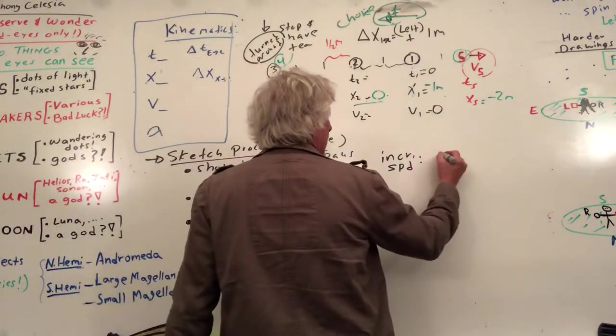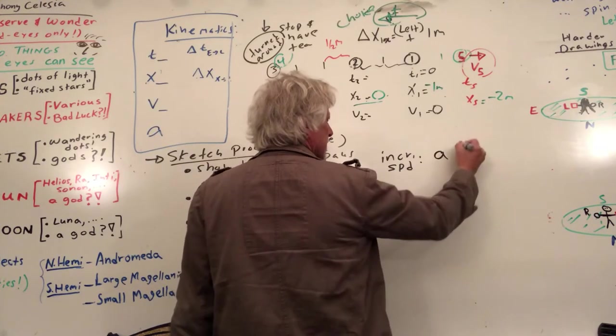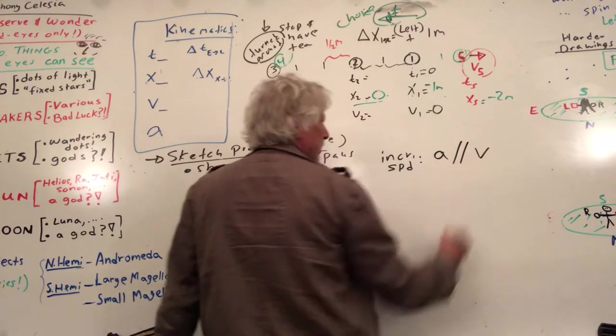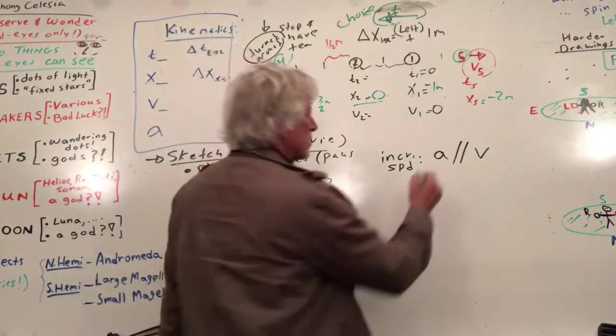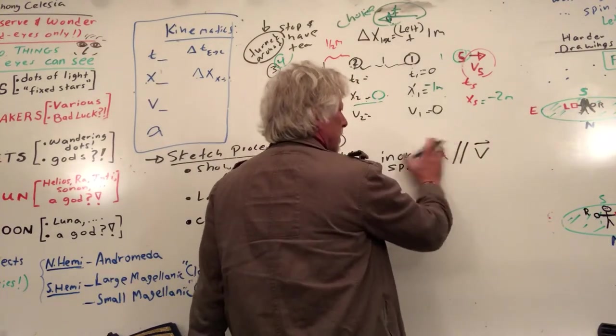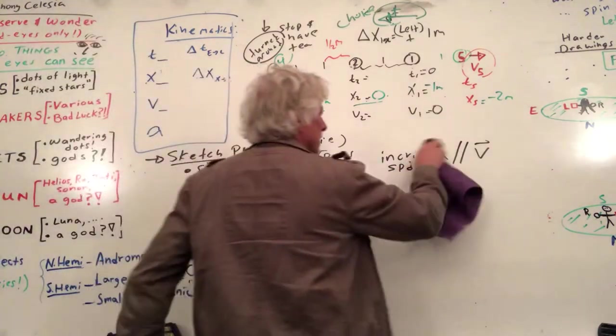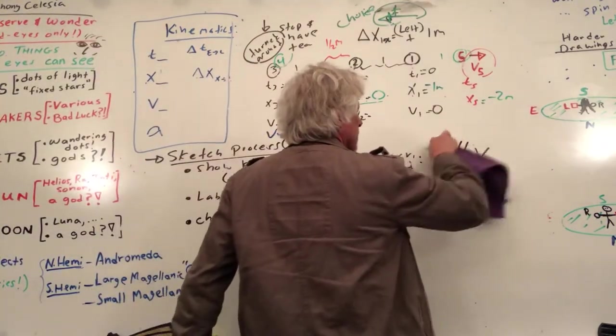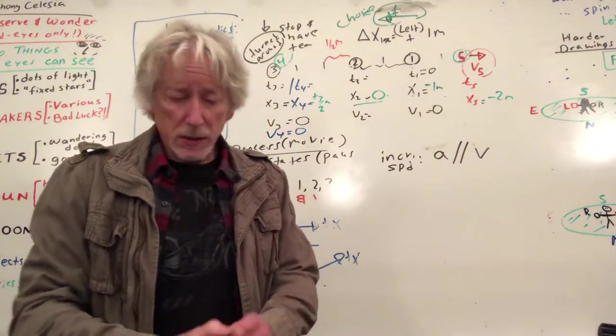Then whichever way you're going, and let's stick with moving along the line right now. Don't think too far ahead. Stick with the training. Increasing speed, your acceleration is always in the same direction. So I say parallel to the velocity. In two dimensions, we'll put a little half arrow on top. This is really good.